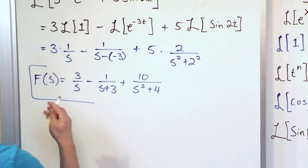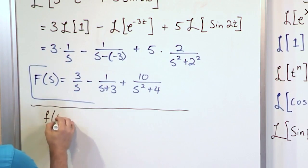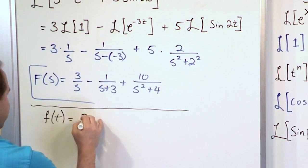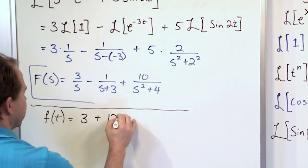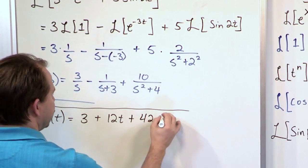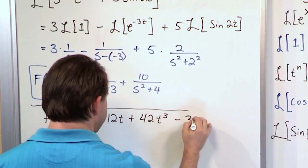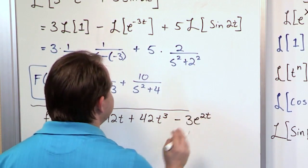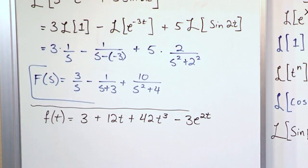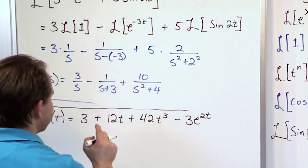Alright let's work another one down below here. We have a function of time 3 plus 12t plus 42t cubed minus 3e to the 2t like this.